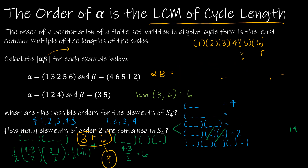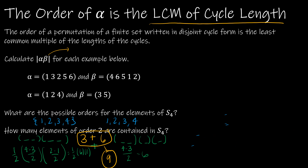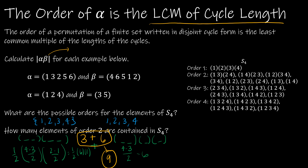Let me erase some of that work and show you we're right by looking at S4 in full. There is one element of order one. There are three elements that are two-cycle times two-cycle. And there are six elements of the form two-cycle times one-cycle times one-cycle — and notice the two one-cycles aren't written explicitly. So we have correctly found the answers to those questions.